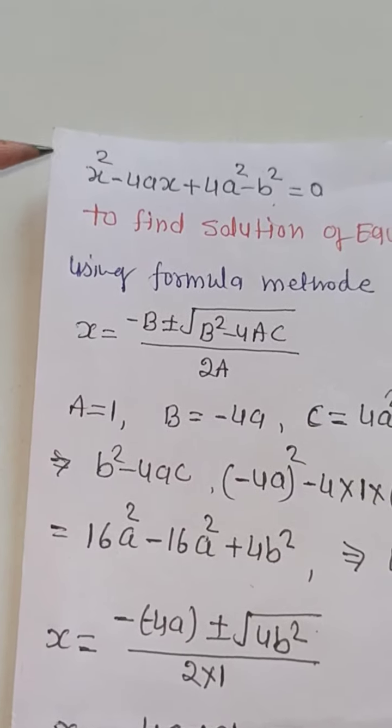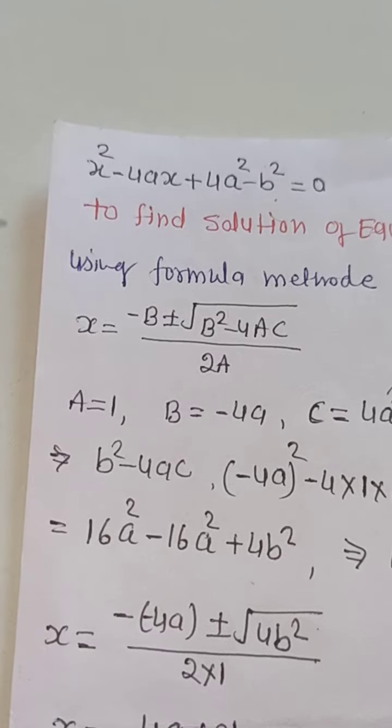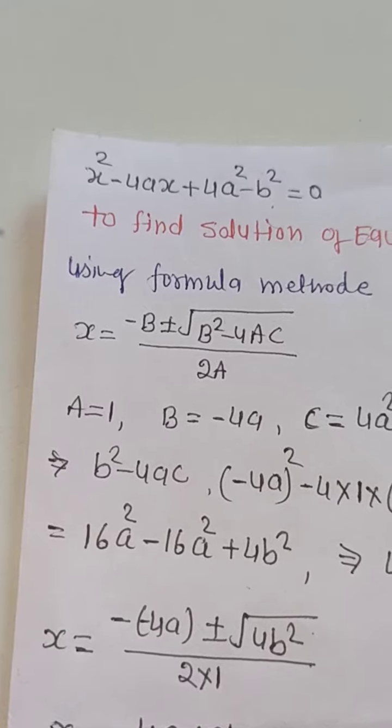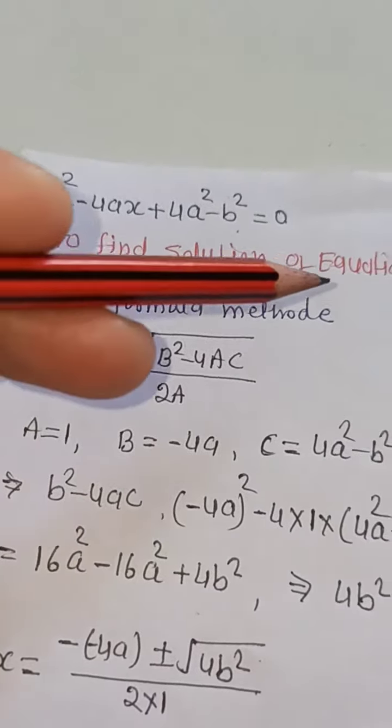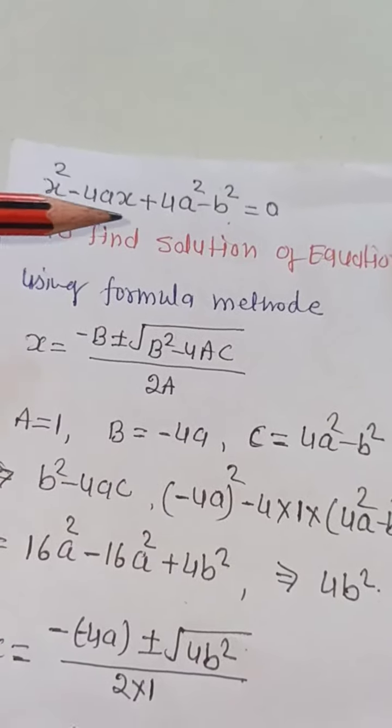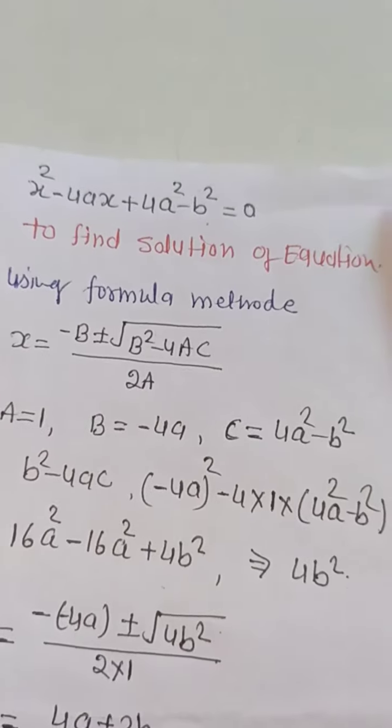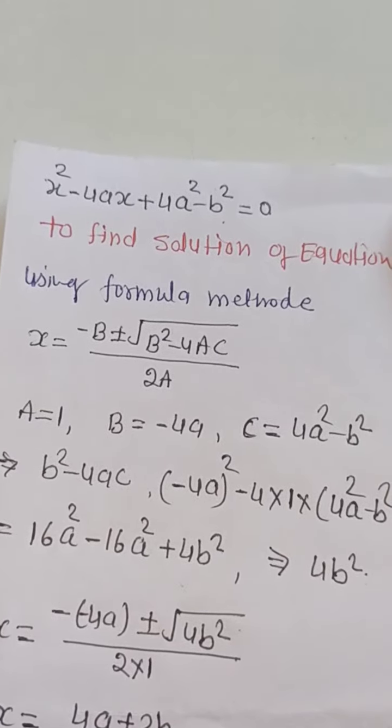This is the quadratic equation x square minus 4ax plus 4a square minus b square equals zero. Now we have to find the equation of x and solve this equation to find the solution.